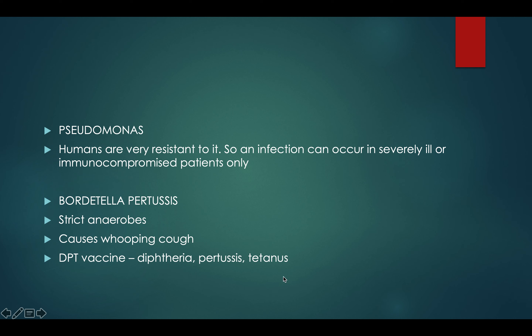There's a question asked a lot in exams: what is the most common vaccine given to children in the United States? The answer is the DPT vaccine — diphtheria, pertussis, and tetanus. Just remember it.